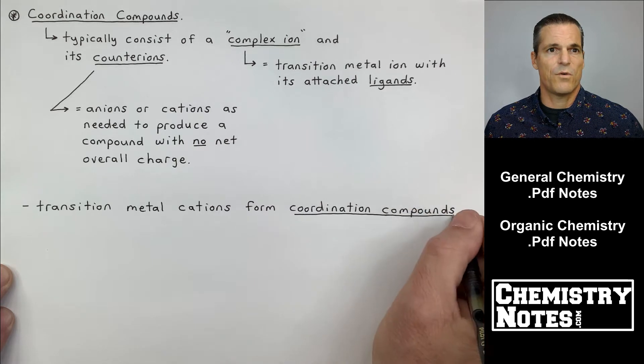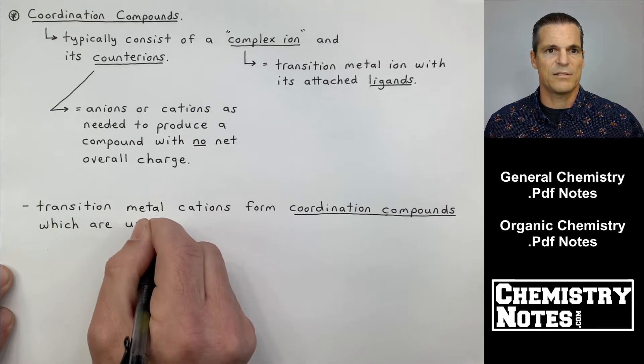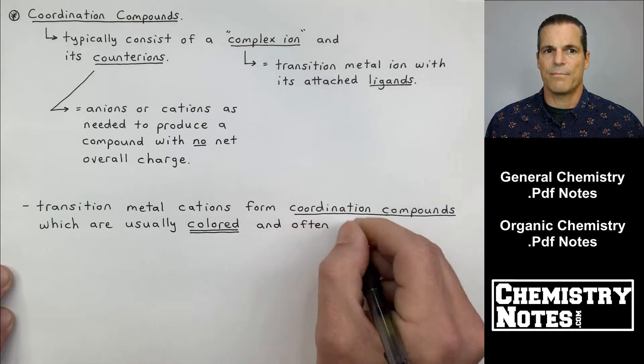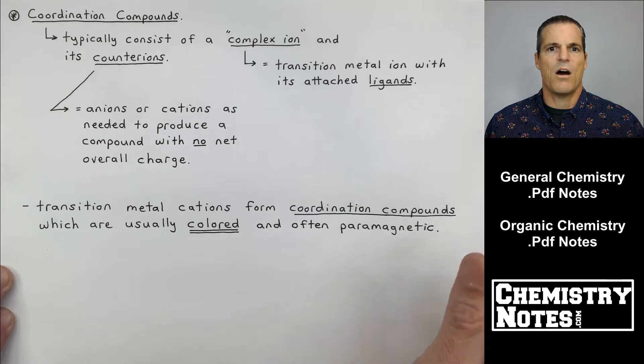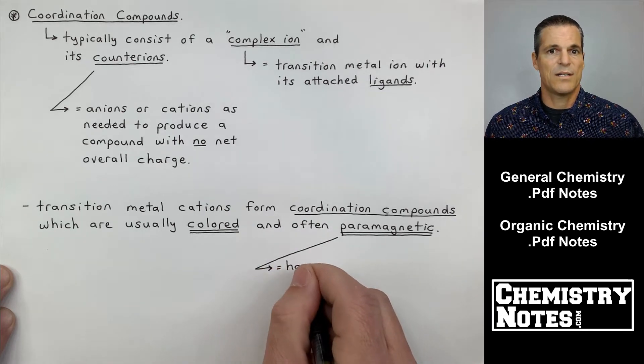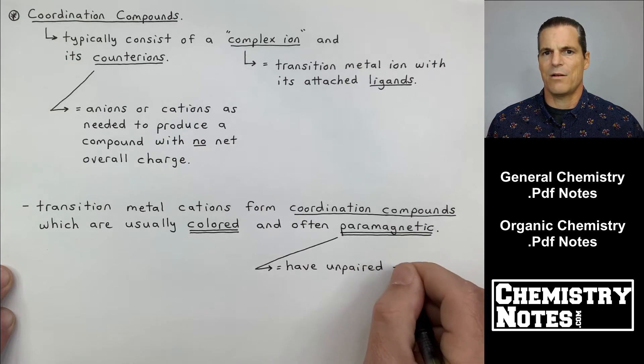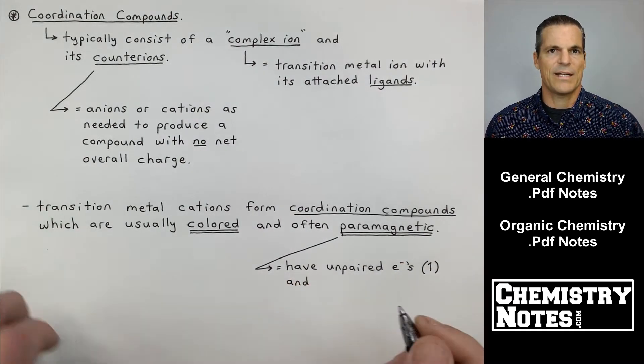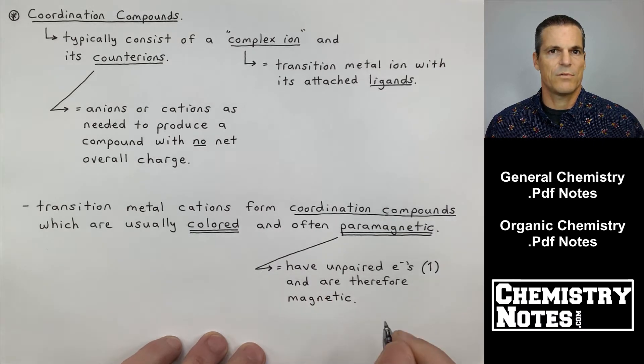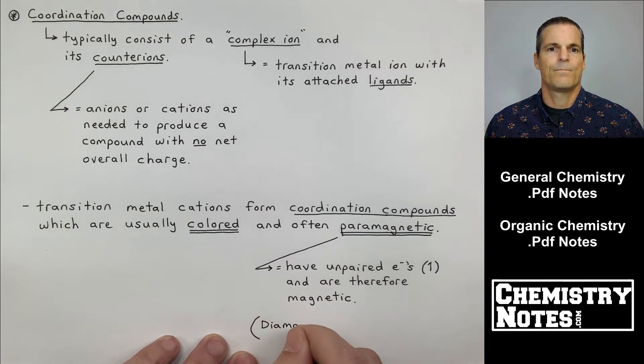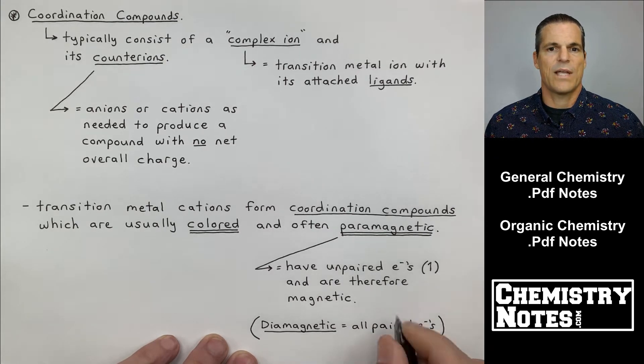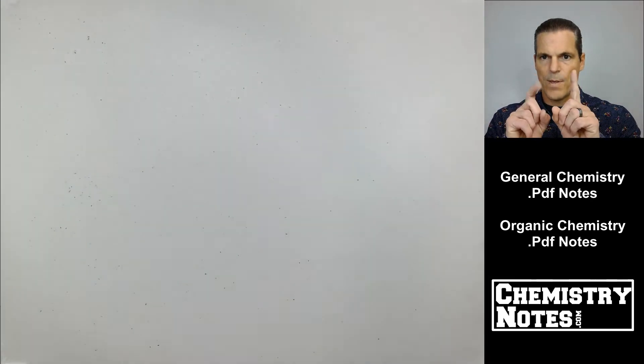So underneath our definitions for coordination compounds, complex ion and counter ions, is a bullet point. And this bullet point says transition metal cations form coordination compounds, which are usually colored and often paramagnetic. Paramagnetic, by the way, means that it has at least one unpaired electron. Be careful there because paramagnetic almost sounds like the word paired, but in reality paramagnetic means it has at least one unpaired electron. If you have an unpaired electron, you are magnetic. By the way, if you have no unpaired electrons, for example, if you are diamagnetic, you would have every single electron is paired up with like one up, one down.